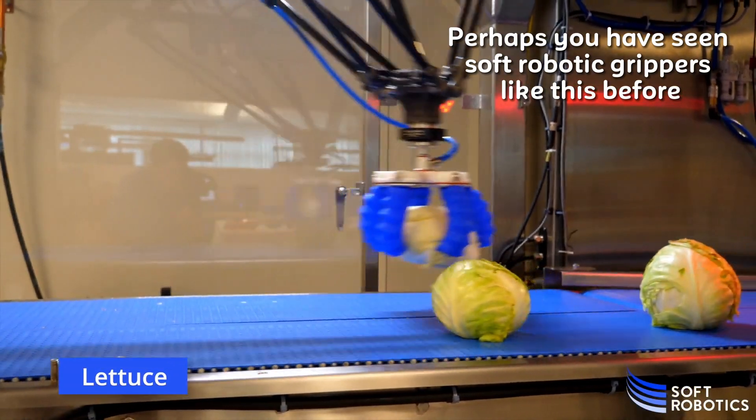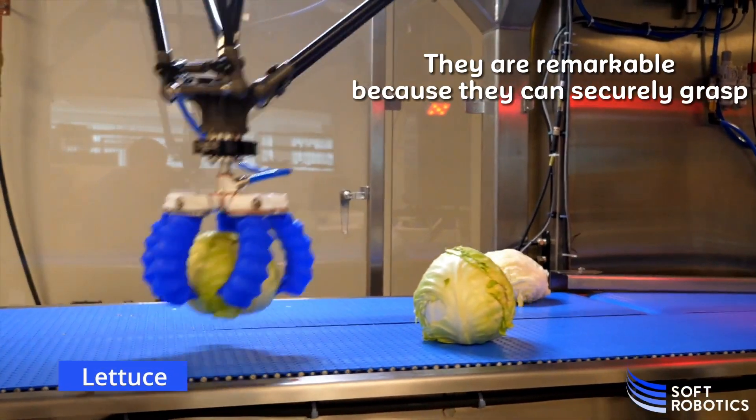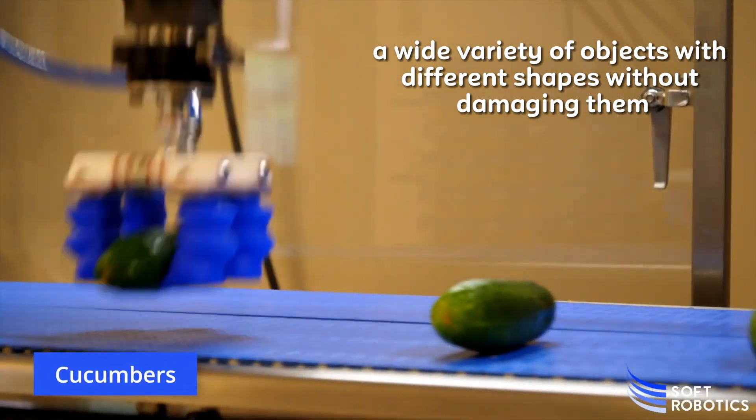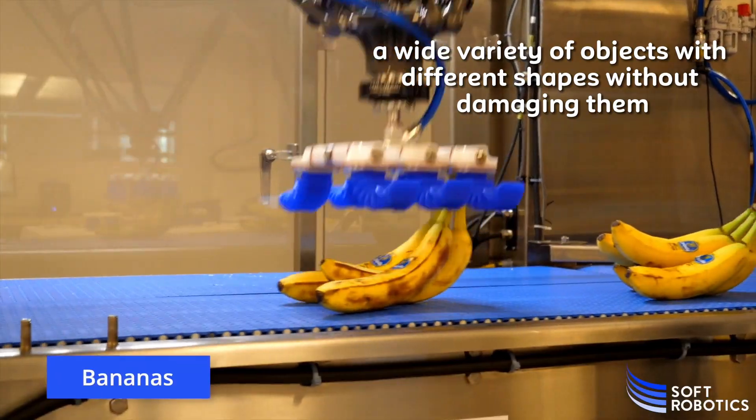Perhaps you have seen soft robotic grippers like this before. They are remarkable because they can securely grasp a wide variety of objects with different shapes without damaging them.